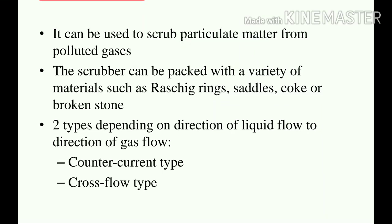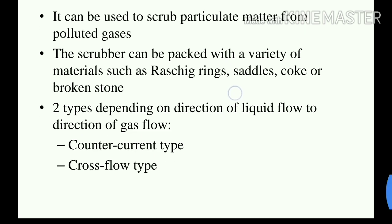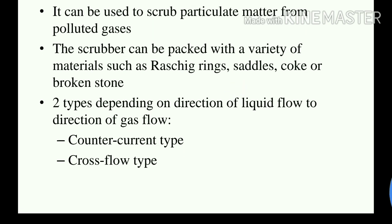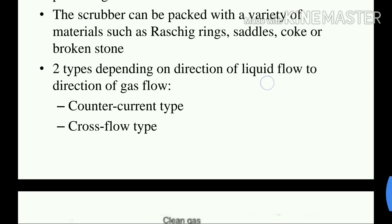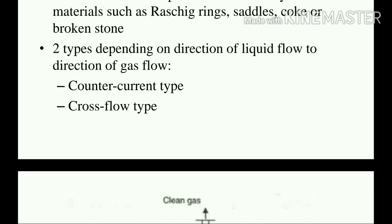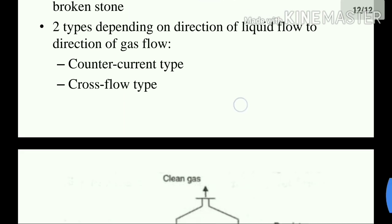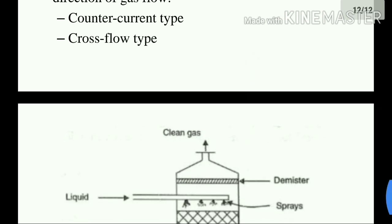Packed towers use packing materials such as Raschig rings, saddles, cockerlings, and broken stones. There are two types of packed towers: counter-current flow and cross-flow. These are classified based on the direction of liquid flow relative to the gas flow.